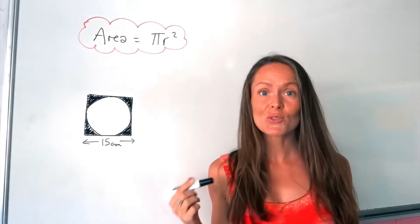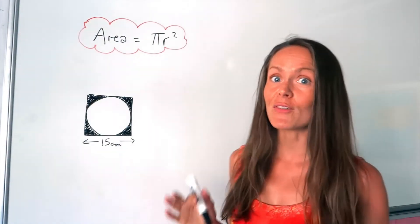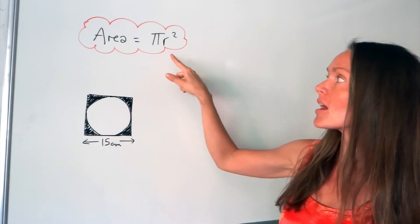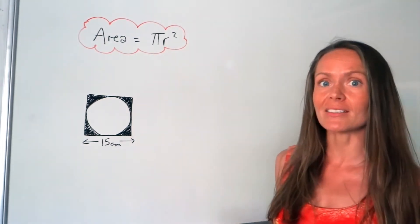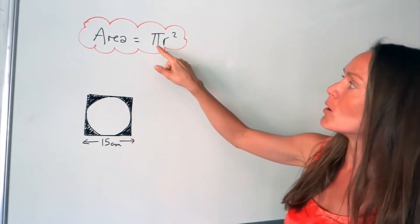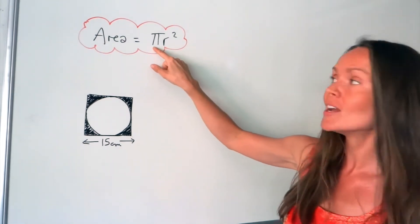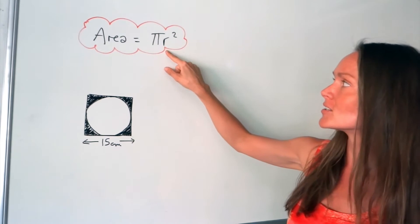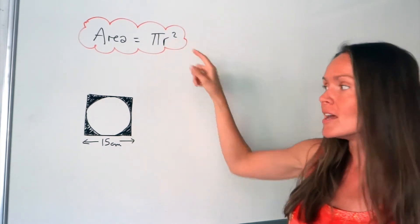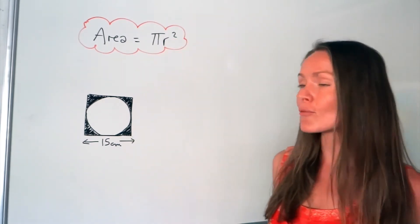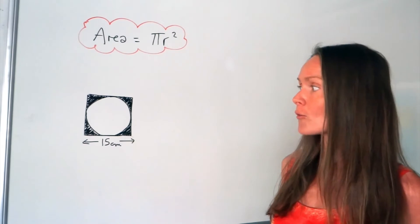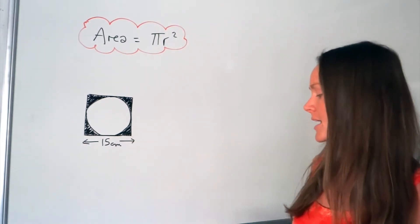So to work out the area of any circle, we need to use this formula here: pi r squared. That just means we need to multiply pi by the radius of the circle squared. Remember, the radius is just the distance halfway across the circle.